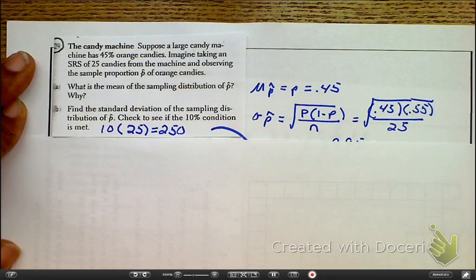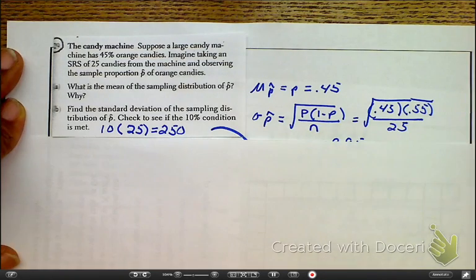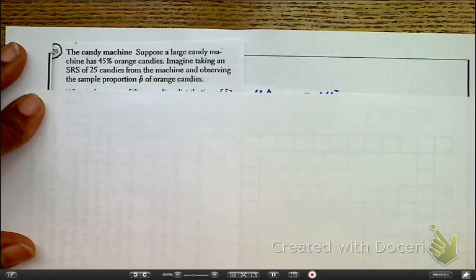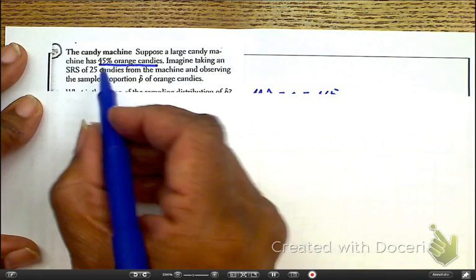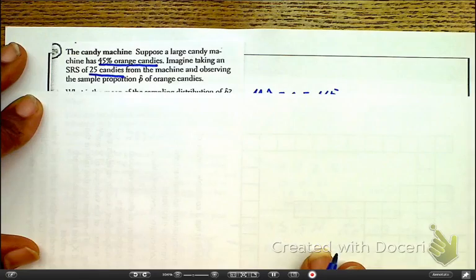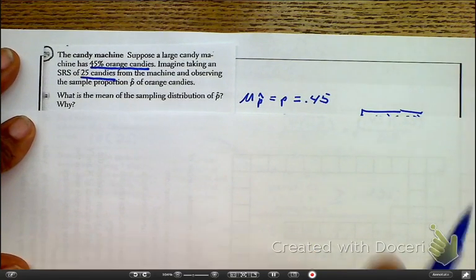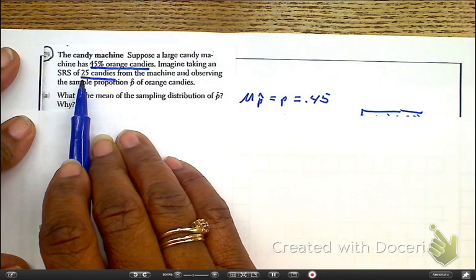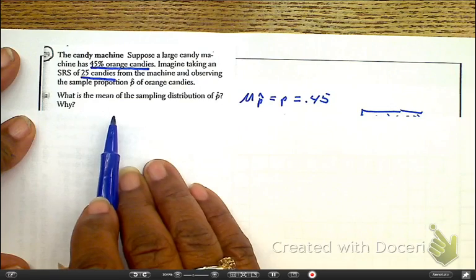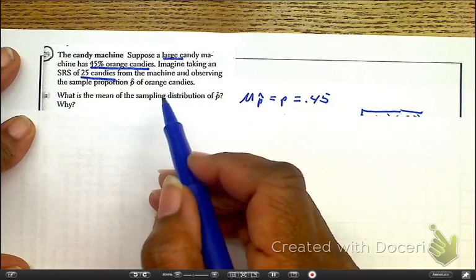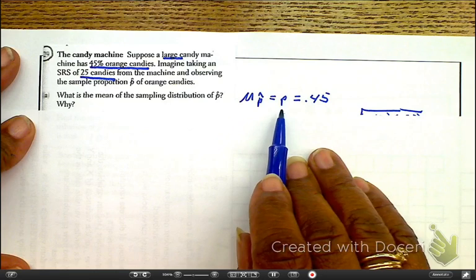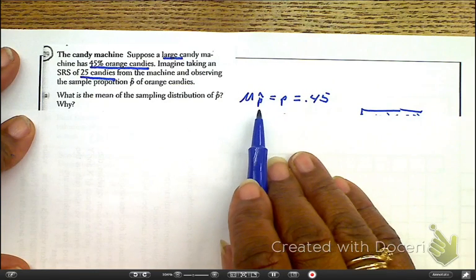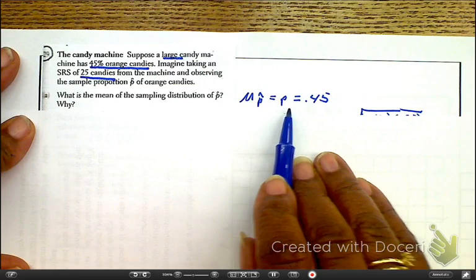Now let's look at a few examples. Take a minute. Pause, please, and read over this. Okay, so we have a large machine that has 45% orange. We have an SRS of 25 candies from the machine. What is the mean? Well, here, because we have the 25, and we are stating that it's a large machine with a large number of candies, then we can make the assumption that the mean of the sample is going to equal the mean of the population. So the mean of the sample proportion is going to equal 45%.